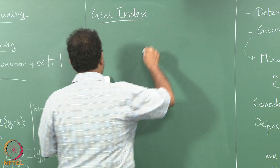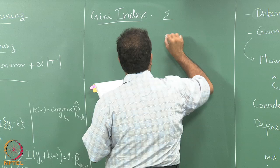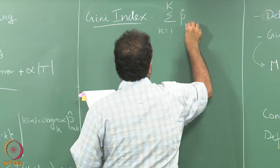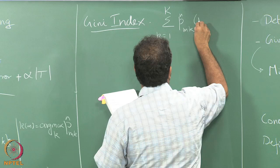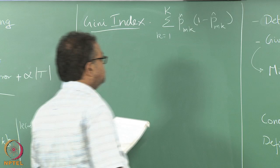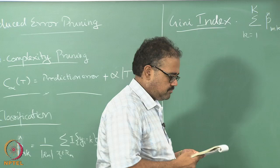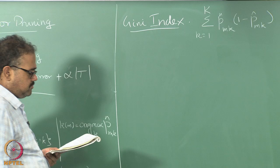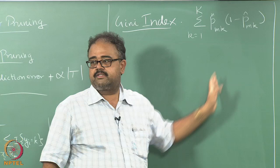The Gini index is given by a specific formula. I compute this for each region individually — this is for a single region — and then do this for all regions.